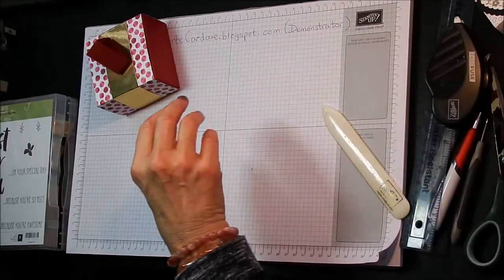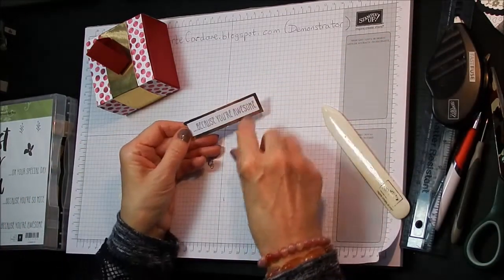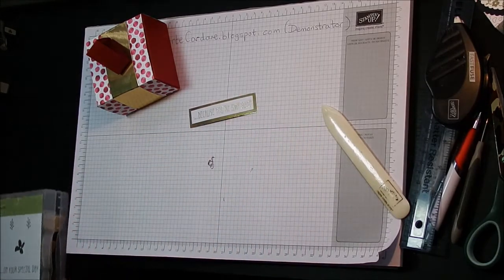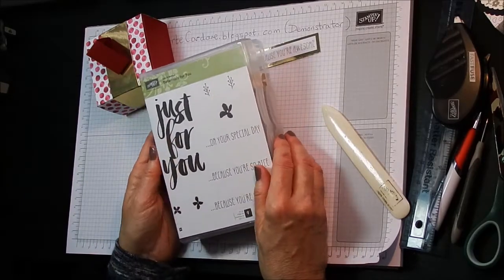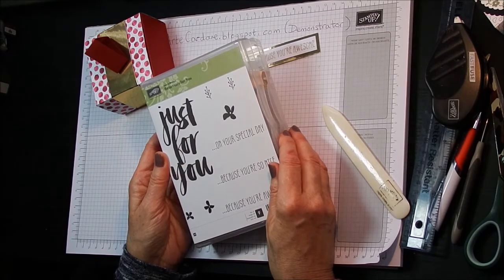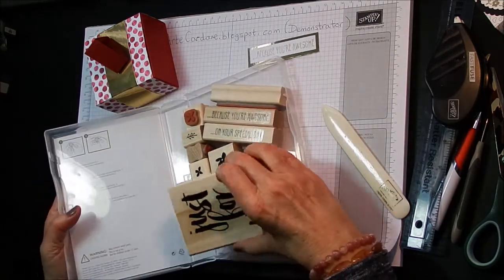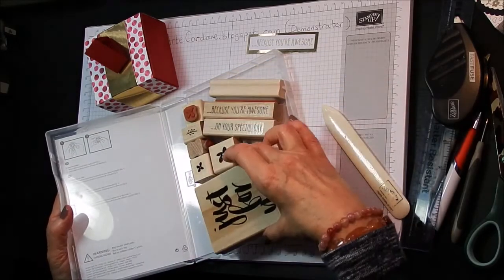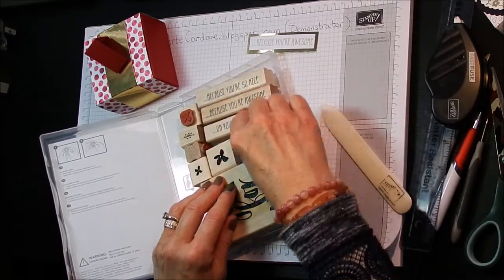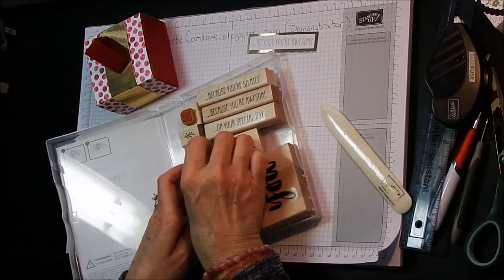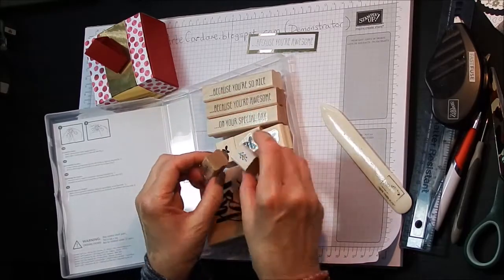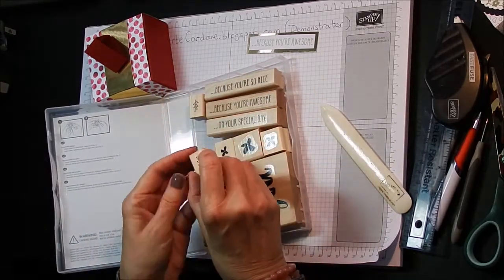So now we need our sentiment. And I have already prepped up and stamped out my sentiment. This sentiment comes from Sale-A-Bration set, which is completely free if you spend £45 on my Stampin' Up website. And this is the stamp set. It's quite large. You get that large stamp that says just for you, one that says because you're so nice, because you're awesome on your special day. You've got these little tiny three little tiny flowers and two little leaves.